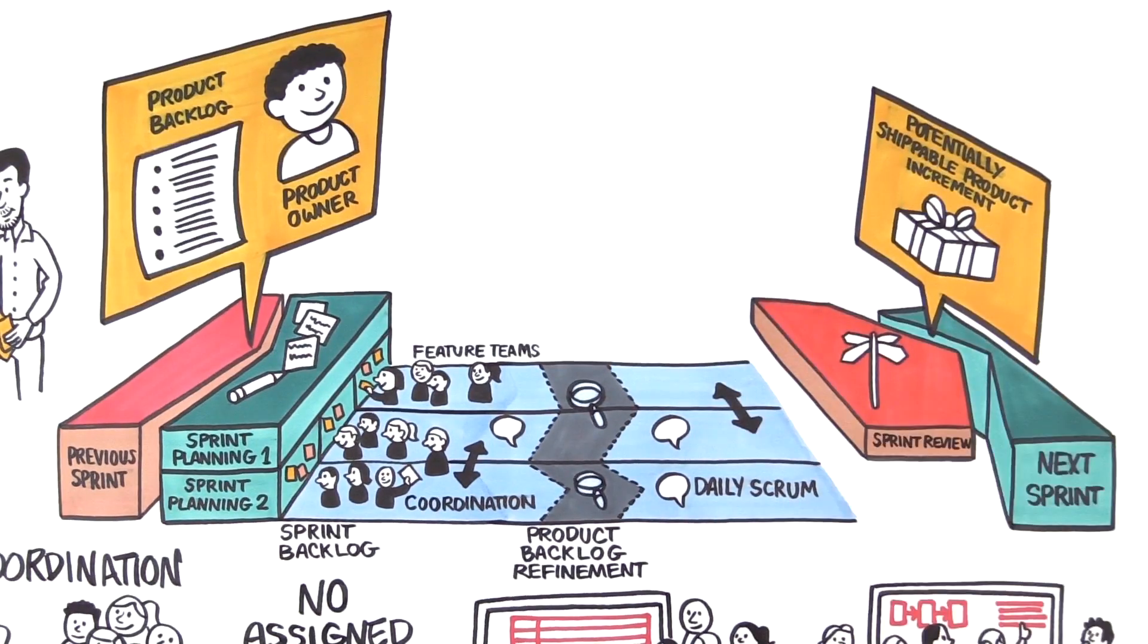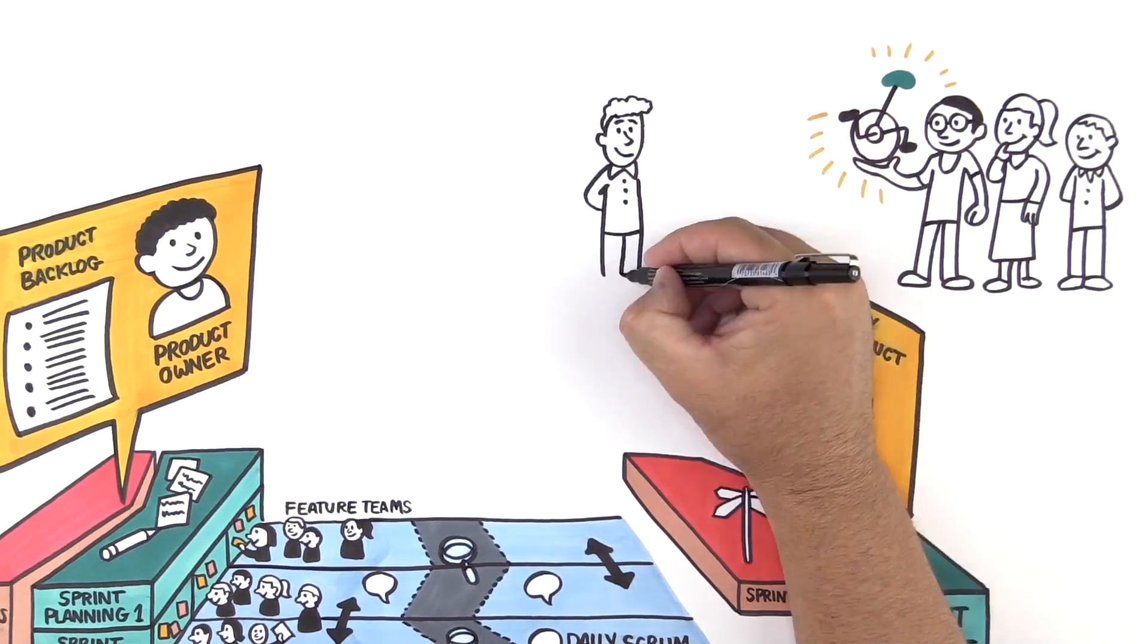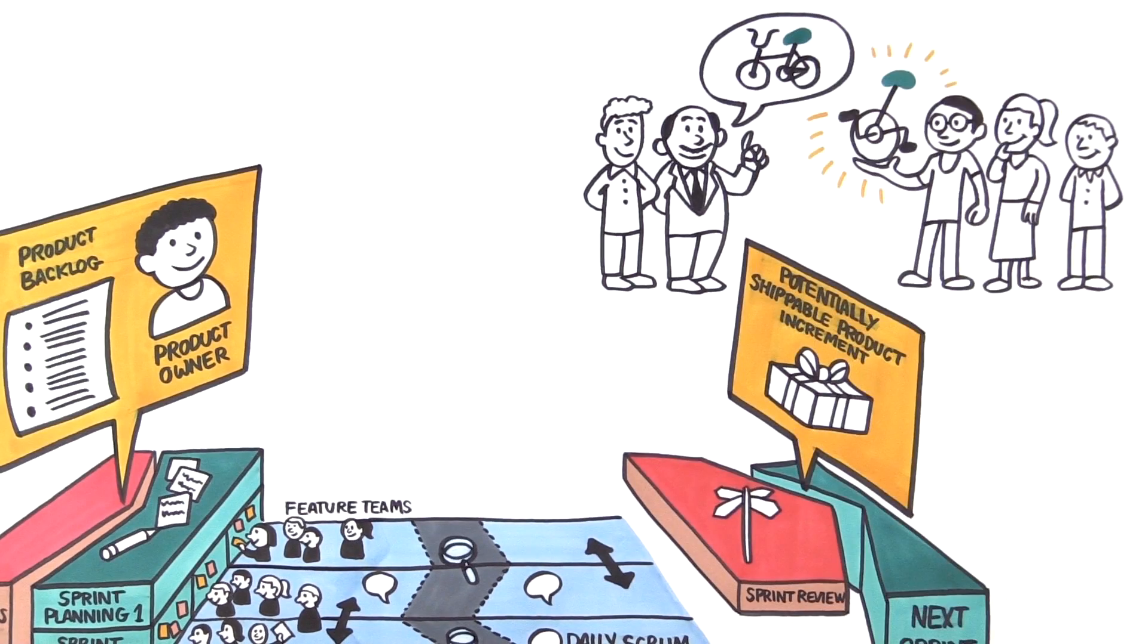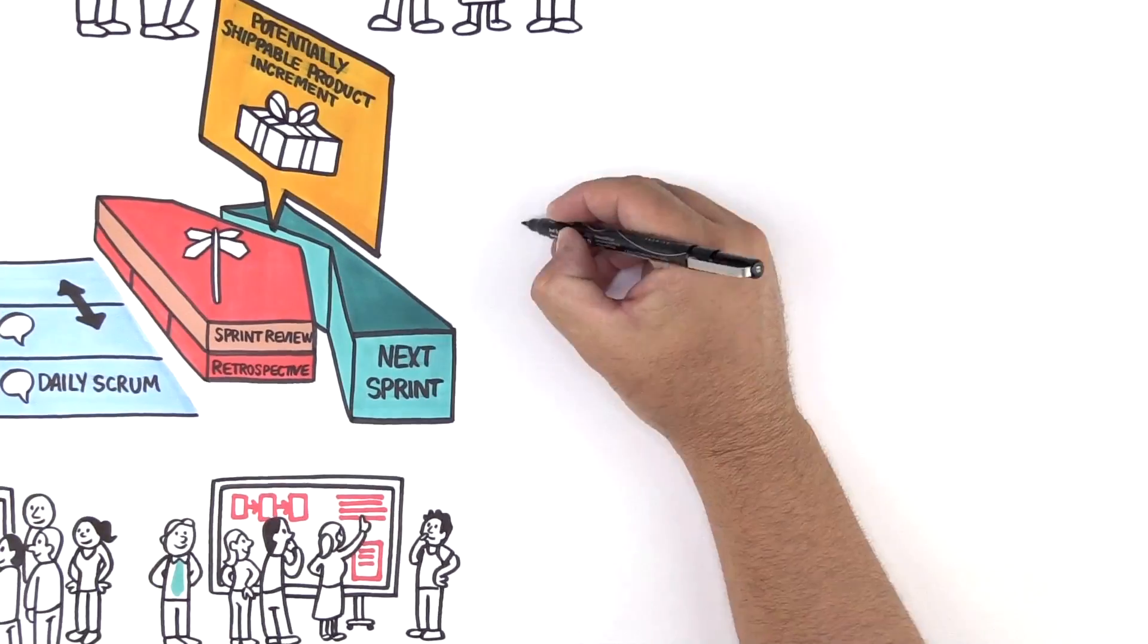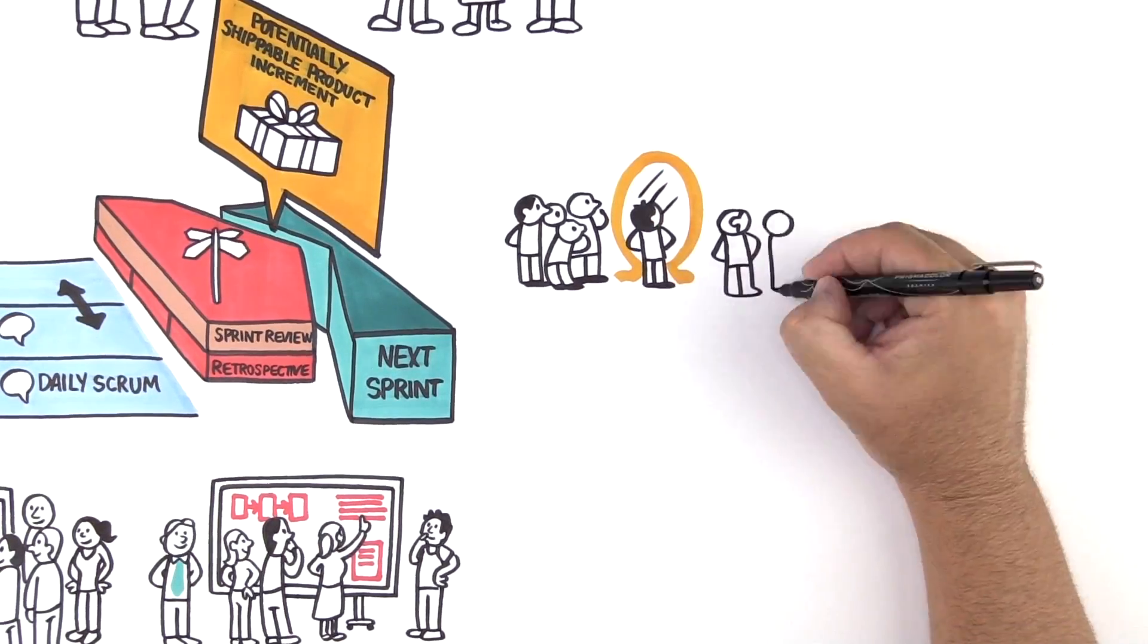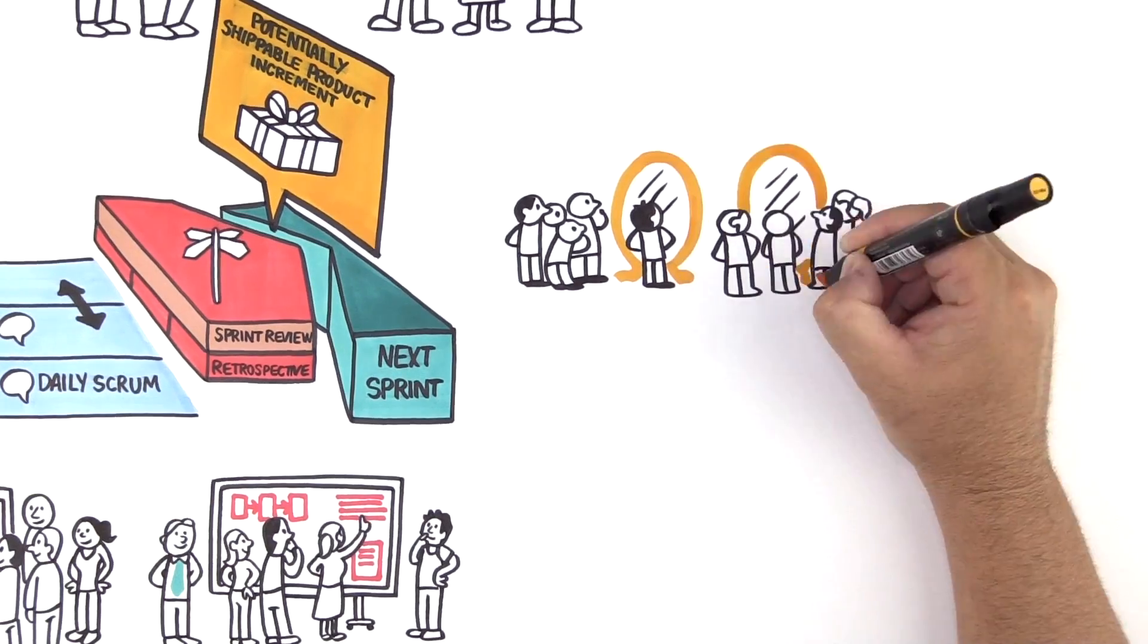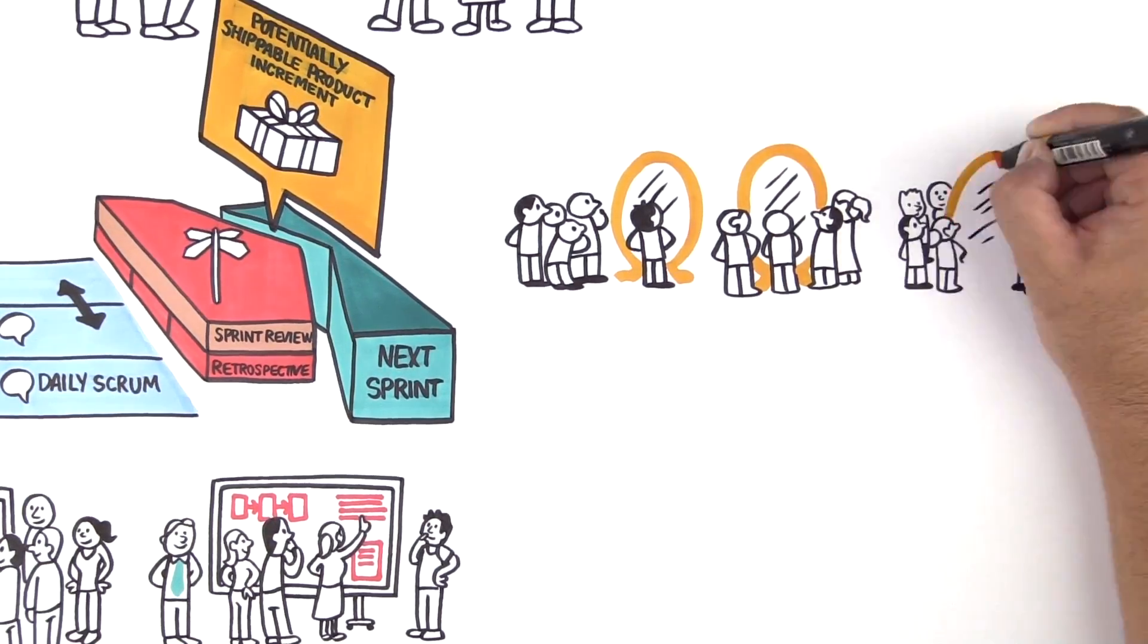We have one Sprint Review, a shared session where teams and customers explore what was done and determine the best next increment to develop. Each team retrospects to inspect and adapt its own way of working. We want teams to own their methods and processes, not rent them. Without ownership, there can be no continuous improvement.